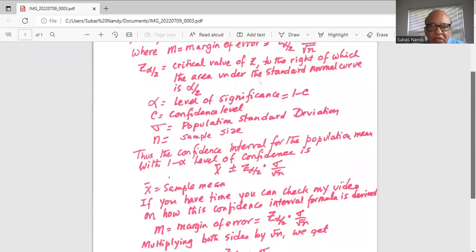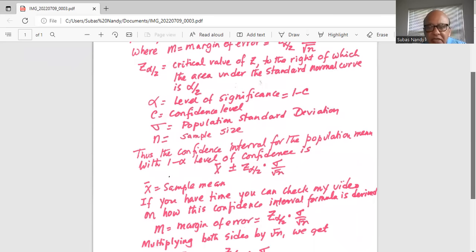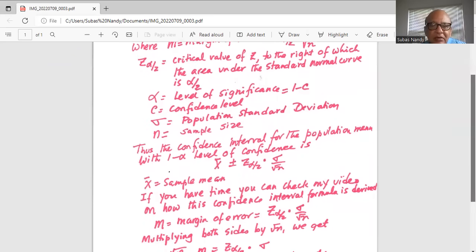So margin of error, as I told you, m is equal to z alpha by 2 multiplied by sigma divided by square root of n. What is margin of error? It is the maximum error possible between the sample mean and the population mean.